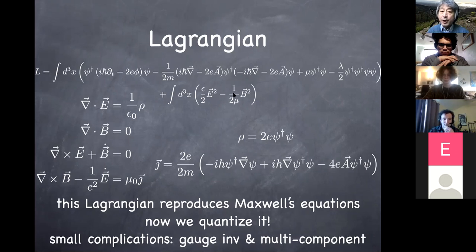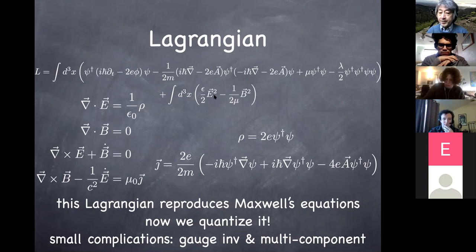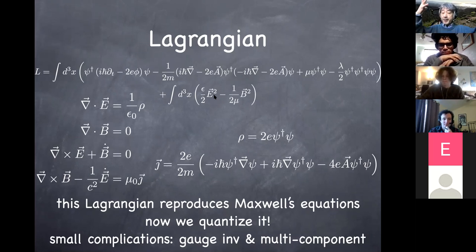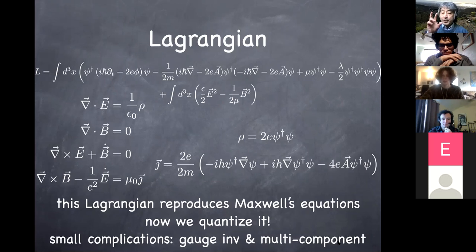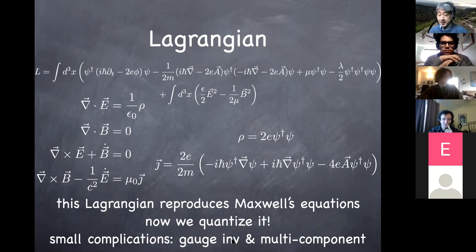Now that we have the Lagrangian, we go through the same steps: identify the variable (the vector potential), define the canonical conjugate object (which turns out to be the electric field), set up the canonical commutation relation, identify the harmonic oscillator hidden inside the field, and define the entire Hilbert space by starting from the vacuum state and acting the creation operator. That's the same steps we followed for the Schrödinger field. There are two differences: first, we are talking about a multi-component field - the vector potential is a vector with three components. Second, we have to make sure what we are doing is consistent with gauge invariance.